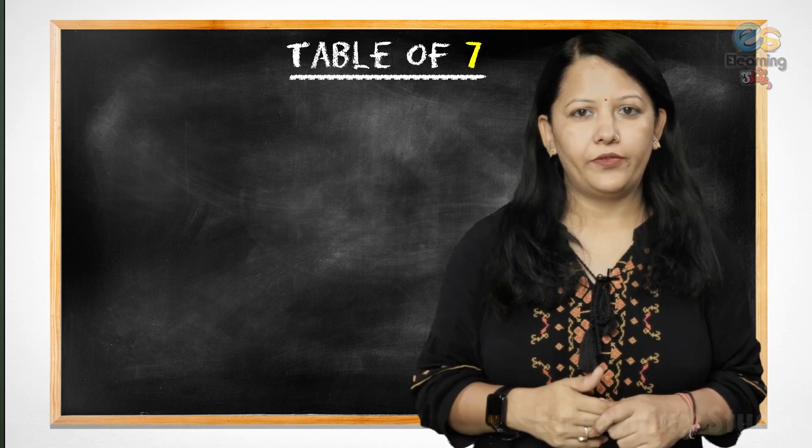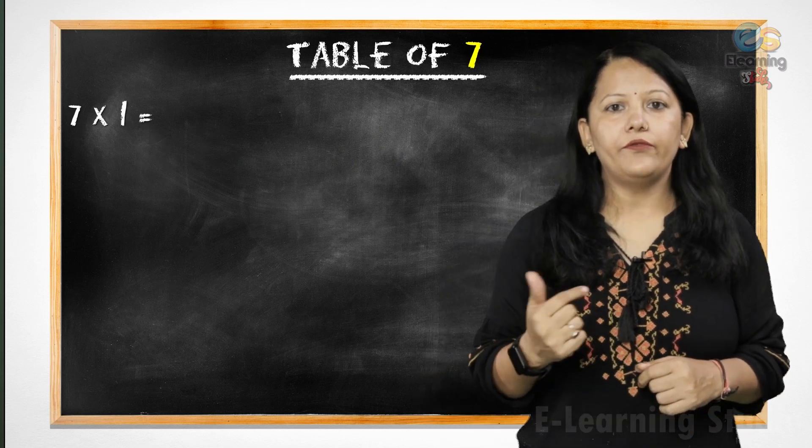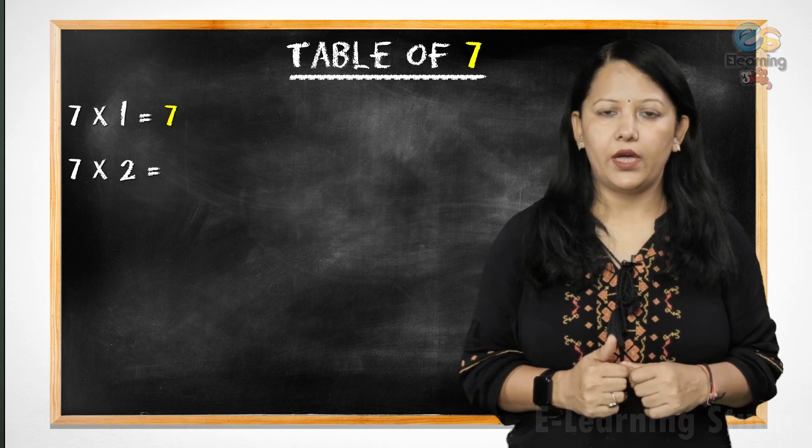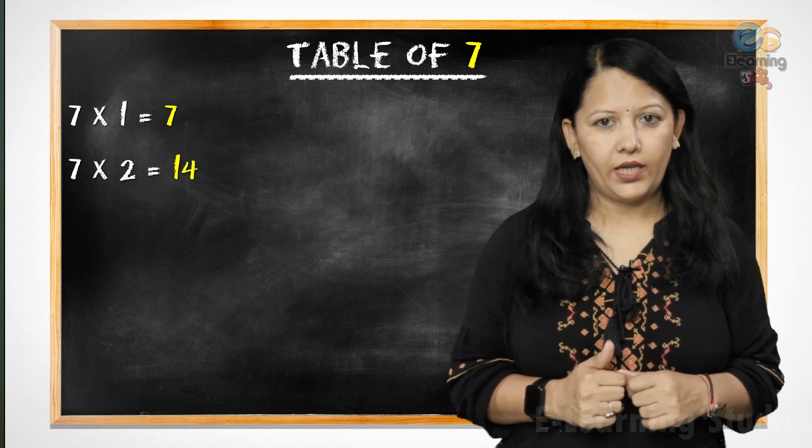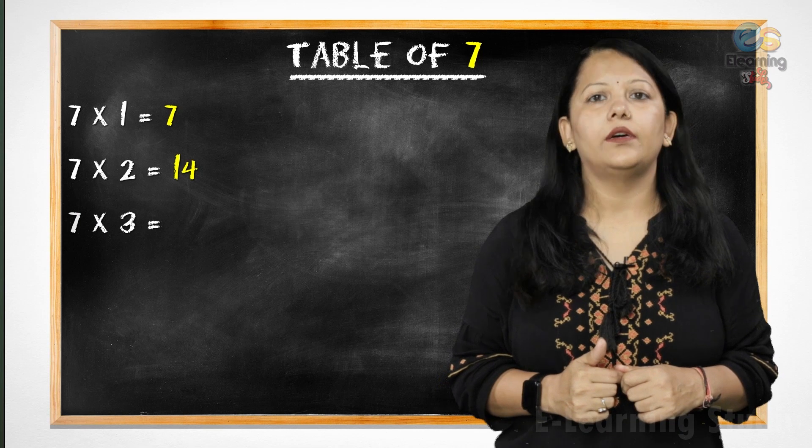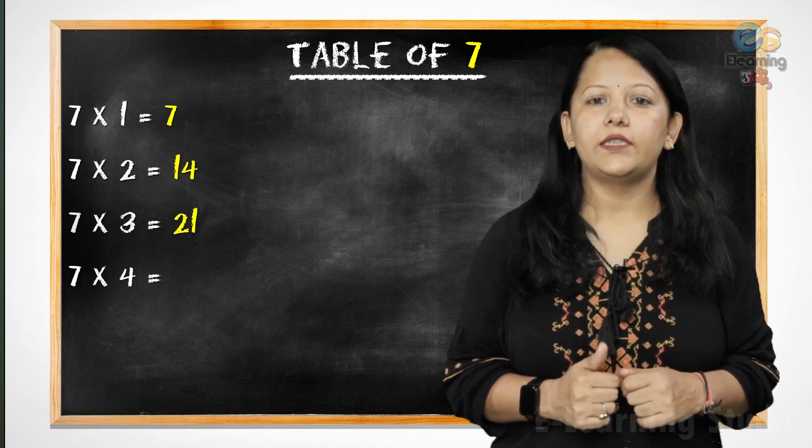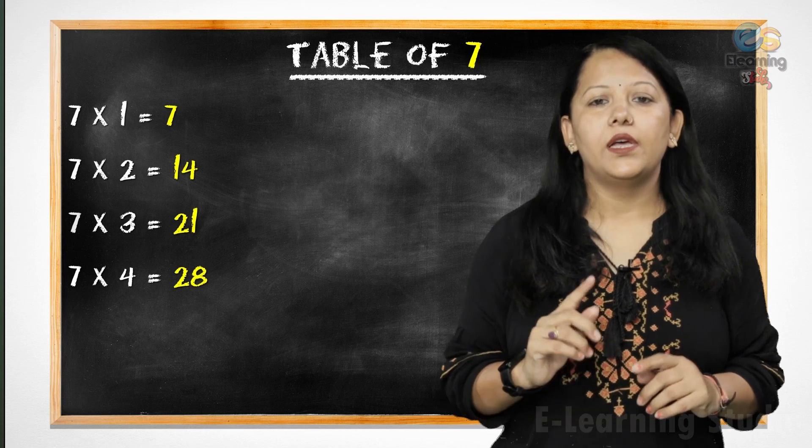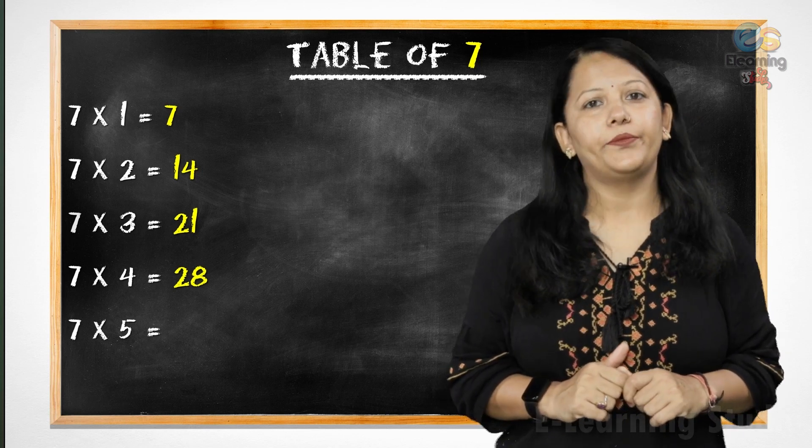Now you will revise with me. 7 ones are 7, 7 twos are 14, 7 threes are 21, 7 fours are 28, 7 fives are 35.